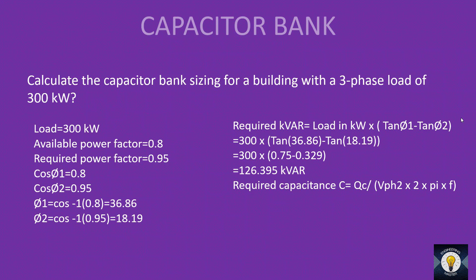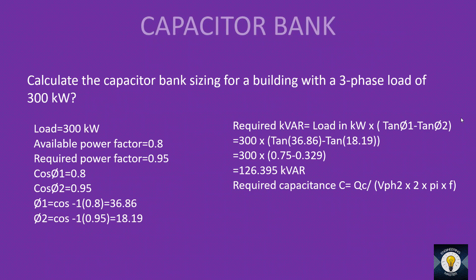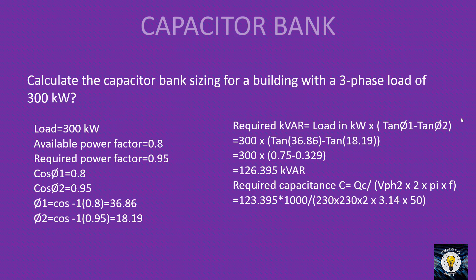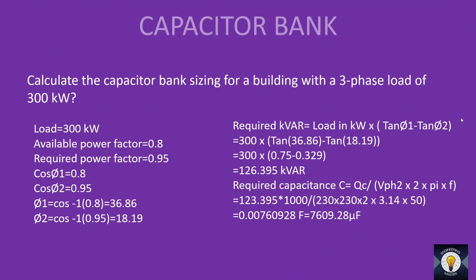The equation for required capacitance in farads is: C = QC / (V_phase² × 2 × π × f), where QC is the required kVAR, phase voltage is 230 V, and frequency is 50 Hz. Substituting: QC = 126.395 × 1000 VAR, divided by (230 × 230 × 2 × 3.14 × 50). The answer is 0.00760928 farad, which converts to 7609.28 microfarad. So our building capacitor bank size is 7609.28 microfarad.